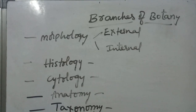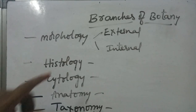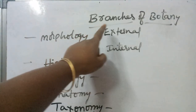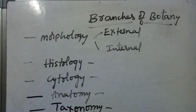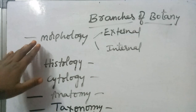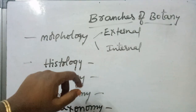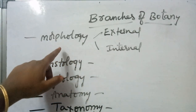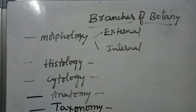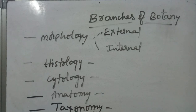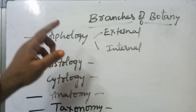Hi students, today we are going to discuss about different branches of botany. The first branch is morphology. Morphology is a branch of biology that deals with the structural organizations of plant body.